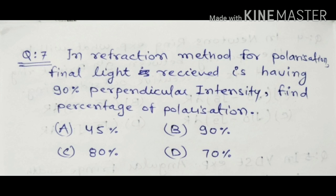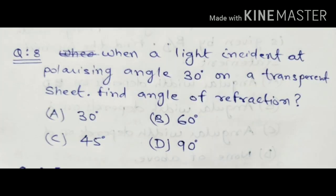Question seven is on the refraction method for polarization. The final angle received has 90 percent perpendicular intensity. Find the percentage of polarization. Please share your answer in the comments — solutions will be provided on my Telegram channel.